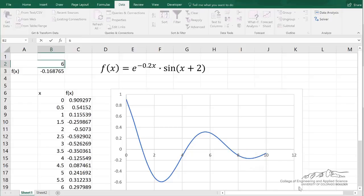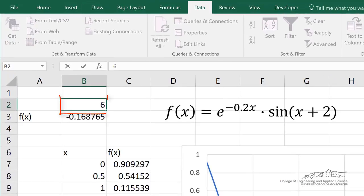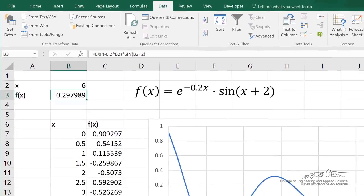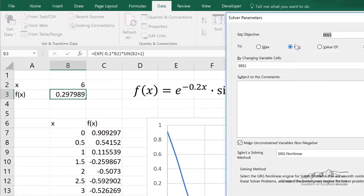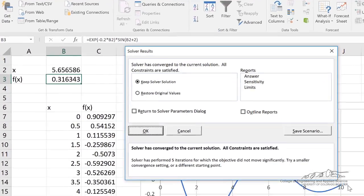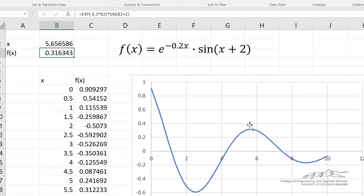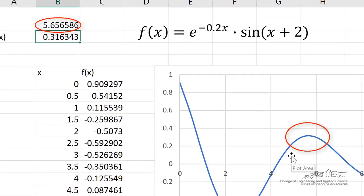Now let's use the solver tool to find the maximum. And I'm going to put in a value of 6 here. And we're going to run the solver tool. Instead of calculating the minimum, we're going to select max. And we click solve. It cranks through and it finds that maximum at about 5.65.